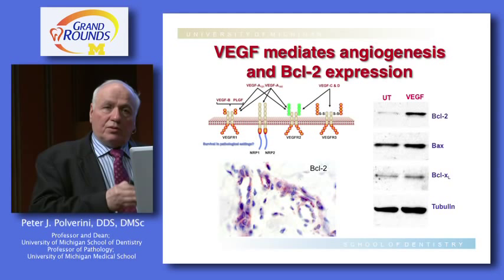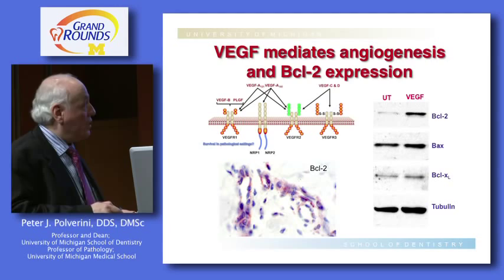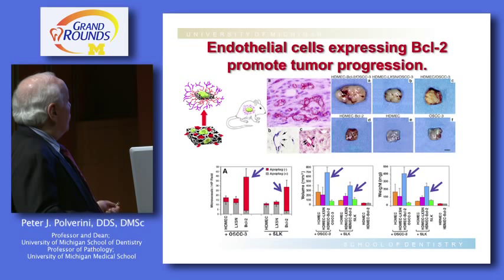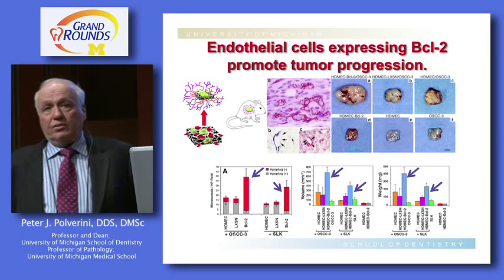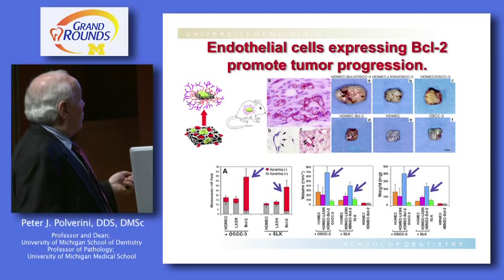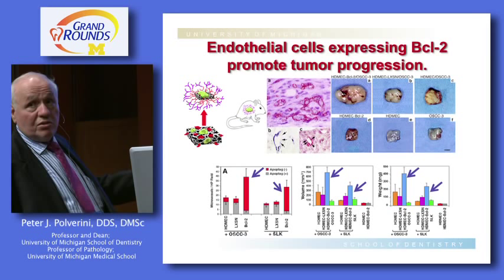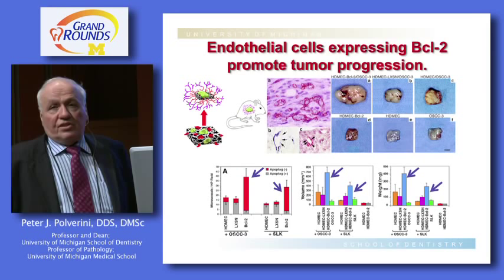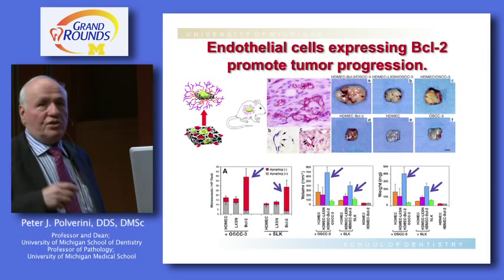Jacques then tried to determine the link between VEGF and BCL2 and how they related to tumor angiogenesis. We developed a model system taking human blood vessel cells, incorporating them into an artificial matrix, and implanting them into a mouse. Over time, the human endothelial cells turned into blood vessels that connected with mouse cells. The question was: what would happen if you introduced BCL2 expressed at high levels in endothelial cells?